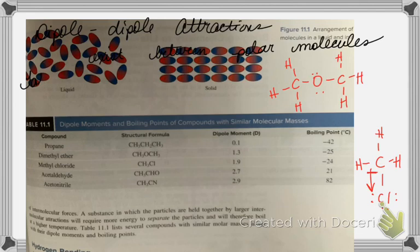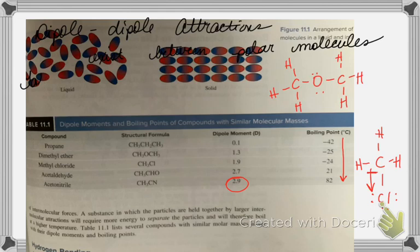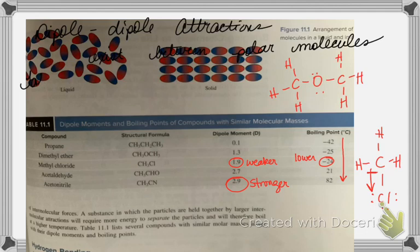Looking at the boiling points in that table, as we go down, the boiling point is clearly increasing. That tells us it's taking more energy to disrupt the intermolecular forces. Why? Because when a molecule is very polar, it has stronger dipole-dipole interactions than a molecule that is not as polar. A less polar molecule has weaker dipole-dipole interactions, meaning its boiling point is lower because it's easier to disrupt weaker dipole-dipole interactions.